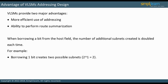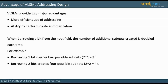For example, borrowing one bit creates two possible subnets since 2 to the power of 1 equals 2. Borrowing two bits creates four possible subnets since 2 to the power of 2 equals 4. Borrowing three bits creates eight possible subnets since 2 to the power of 3 equals 8, and so on. The number of bits borrowed determines the block size.